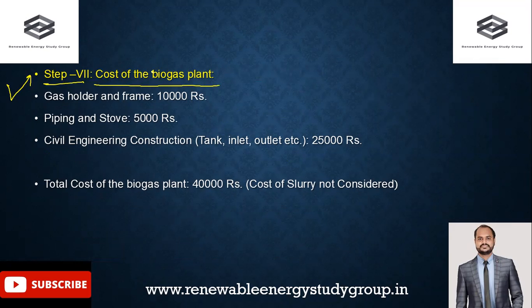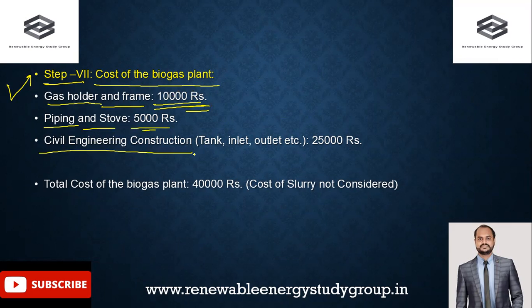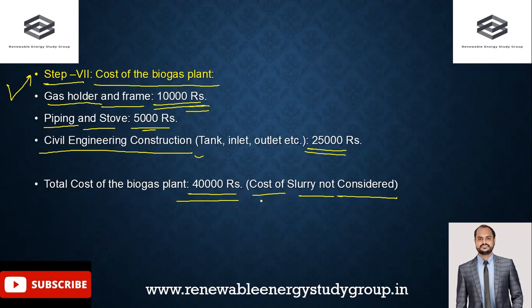Step 7 covers the cost of the biogas plant. Costs vary by country due to inflation. In Indian rupees, the approximate costs are: gas holder and frame — ₹10,000; piping and storage — ₹5,000; civil engineering, construction, tank, inlet/outlet pipes — ₹25,000. The total average cost is approximately ₹40,000 for this biogas plant design. The cost of slurry is not included, as it may be available from the consumer's own livestock.